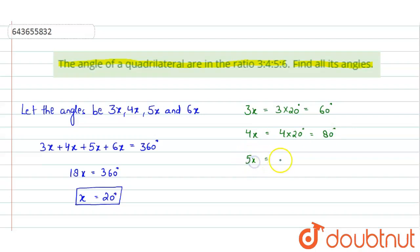5x = 5 × 20 = 100 degrees, and 6x = 6 × 20 = 120 degrees.